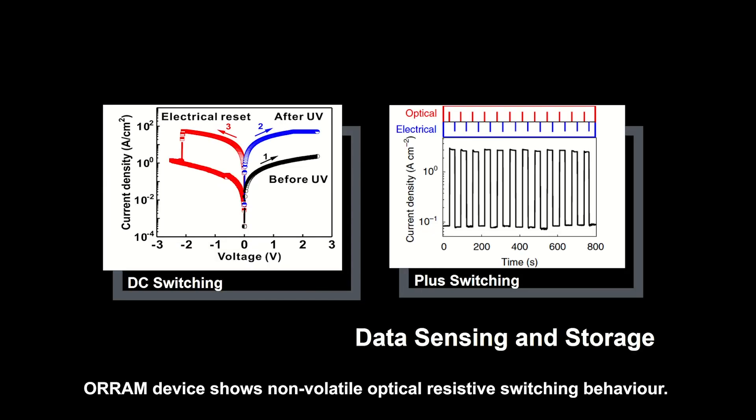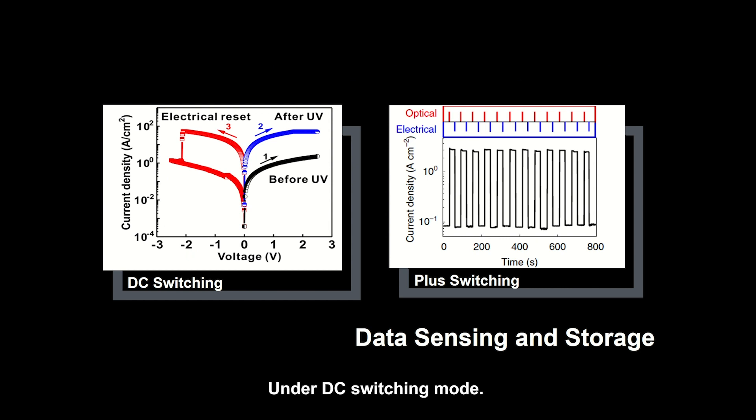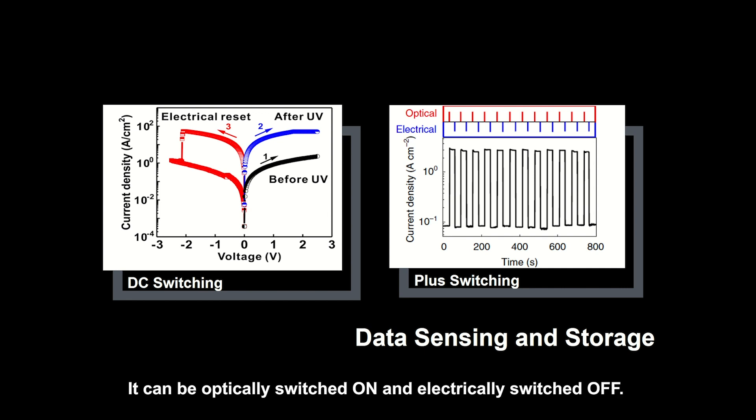The RAM device shows non-volatile optical resistive switching behavior. Under DC switching mode, it can be optically switched on and electrically switched off. Under pulse switching mode, the device can work for many cycles.